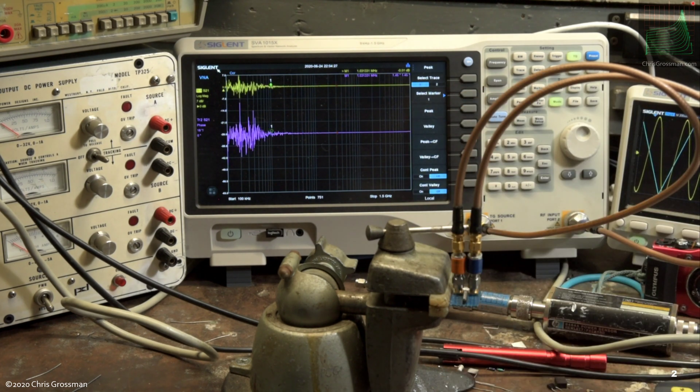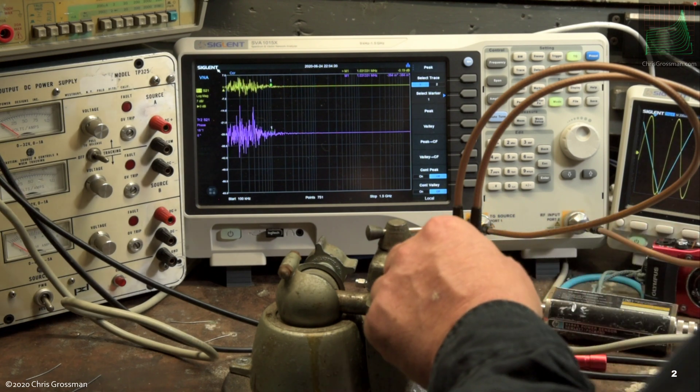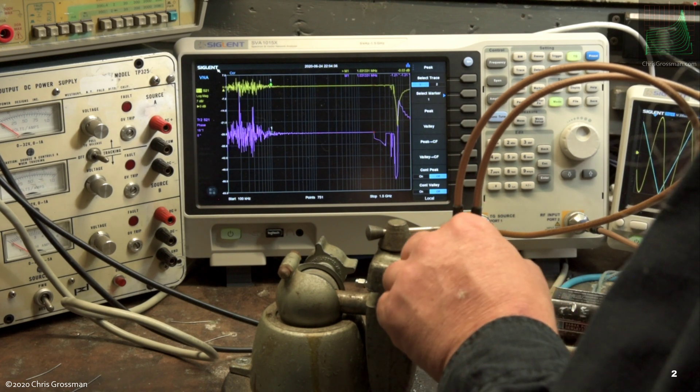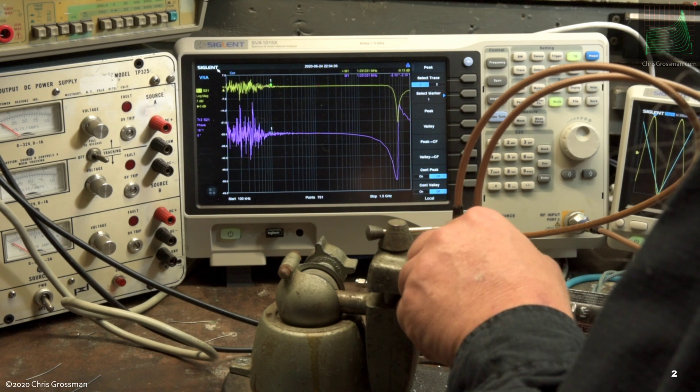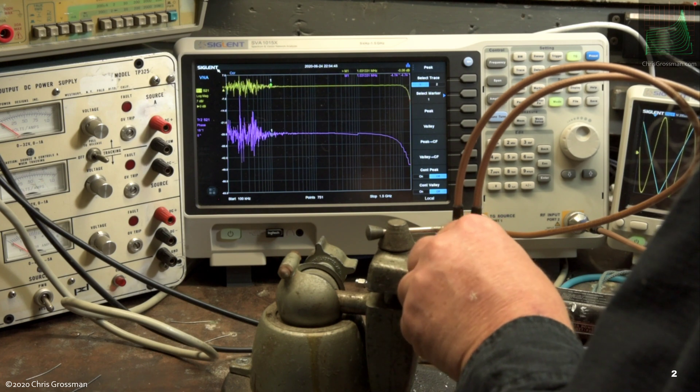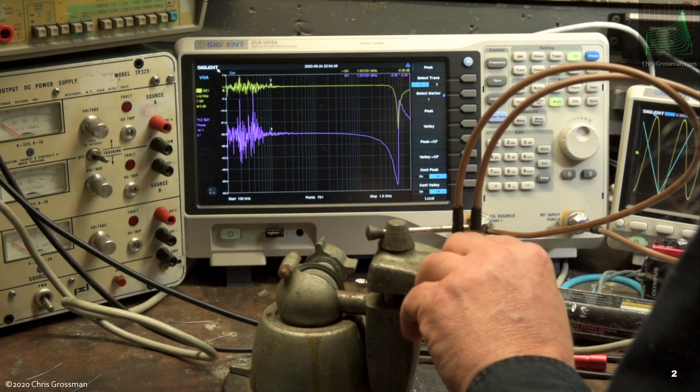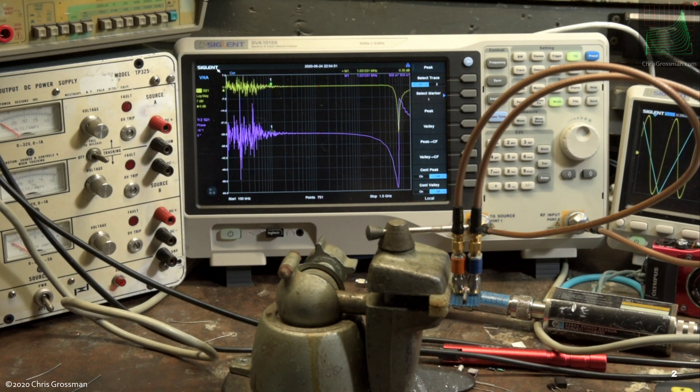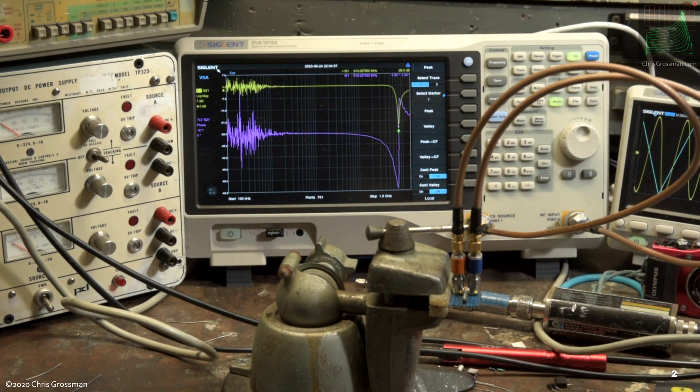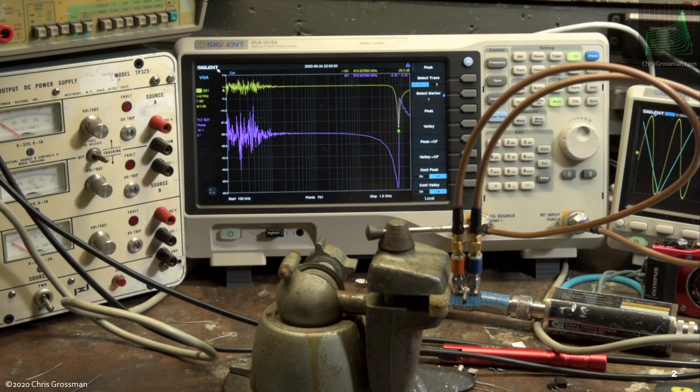Now I'm going to take a 3.9 picofarad capacitor and put it in the fixture. And now you can see this valley's moved up. I hit the valley marker, and this one is now at 810 megahertz. So that's all I'm going to do with this. It's almost three decades of frequency away and approximately six decades of capacitance difference.